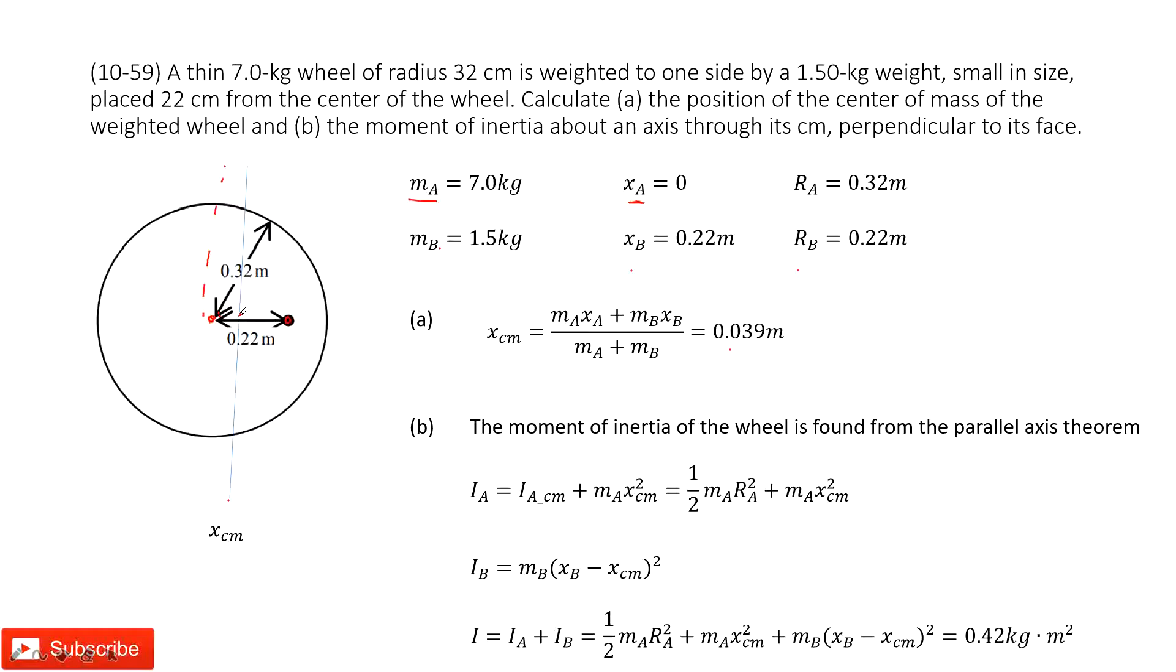We need to find moment of inertia about an axis through its center of mass. So through its center of mass, first one, it is at zero. So when it is at zero, so first one...